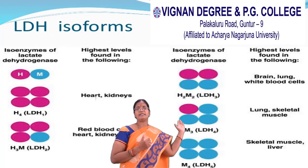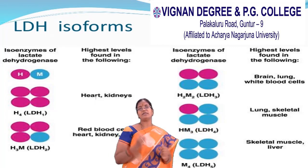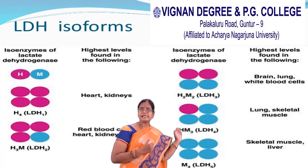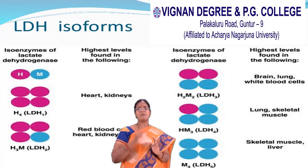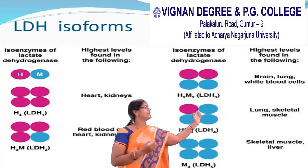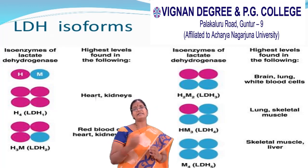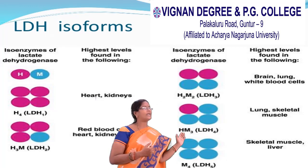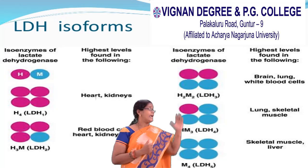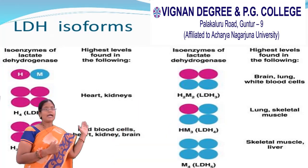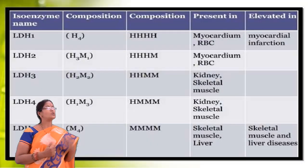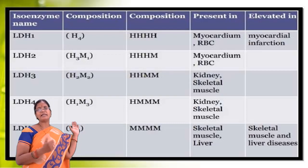LDH2 is more predominant in red blood cells and LDH3 is more predominant in white blood cells. Coming to LDH4, which is composed of 1 heart subunit and 3 muscle subunits, mainly seen in lung and skeletal muscles. The last one is LDH5, totally composed of 4 muscle subunits, represented as M4, mainly found in skeletal muscle and liver.